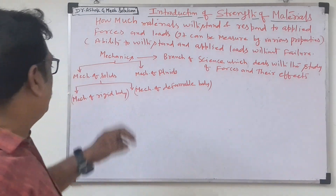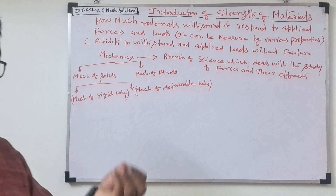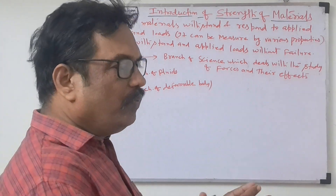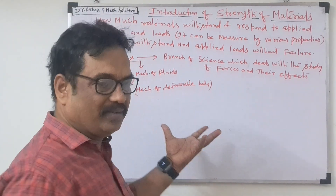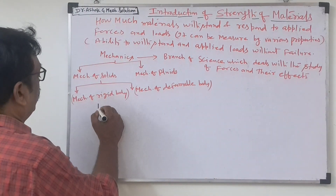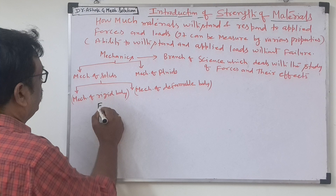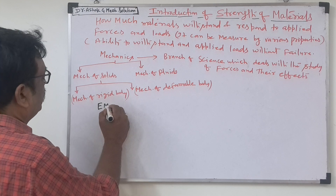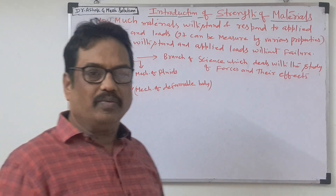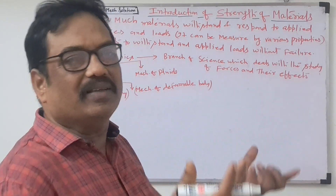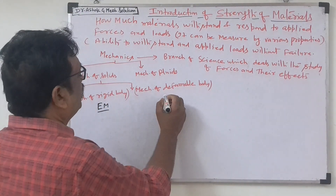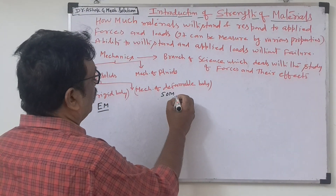What is the mechanics of the rigid body? Rigid body means the body will not move — the body will be fixed. This is studied in engineering mechanics only. But deformable body means once a force is applied, the body will change its shape and size. This is studied in strength of materials.